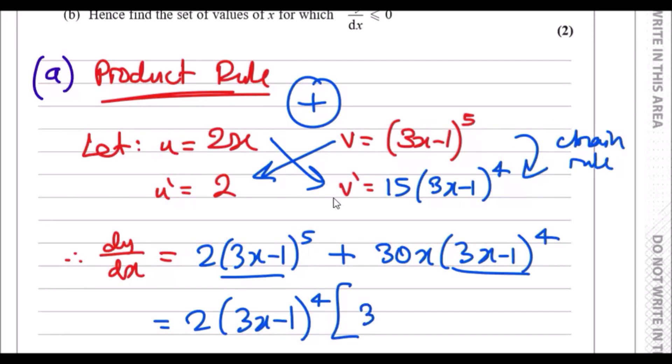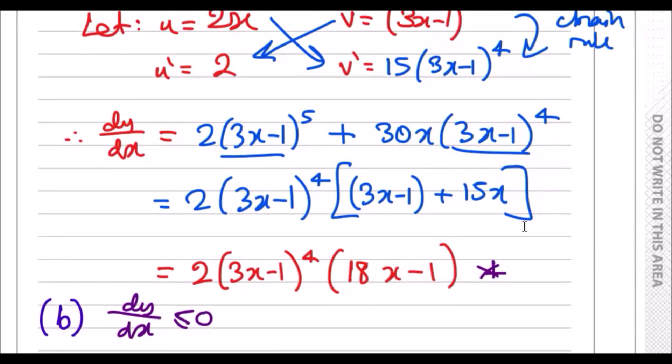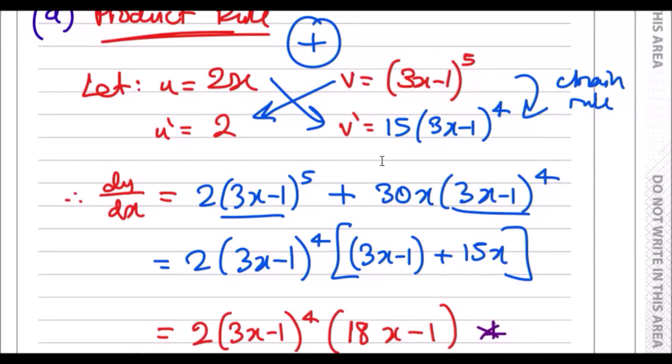Having (3x-1)^4, on the left side you still have an extra (3x-1) to account for. On the right side, to get 30x from 2 you've got 15x remaining. Expand and tidy: 3x-1+15x gives 18x-1. That's it, fully factorized.